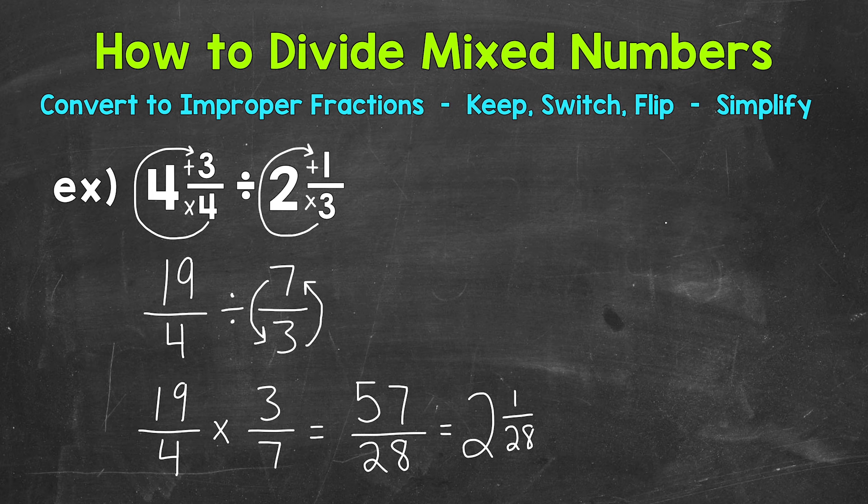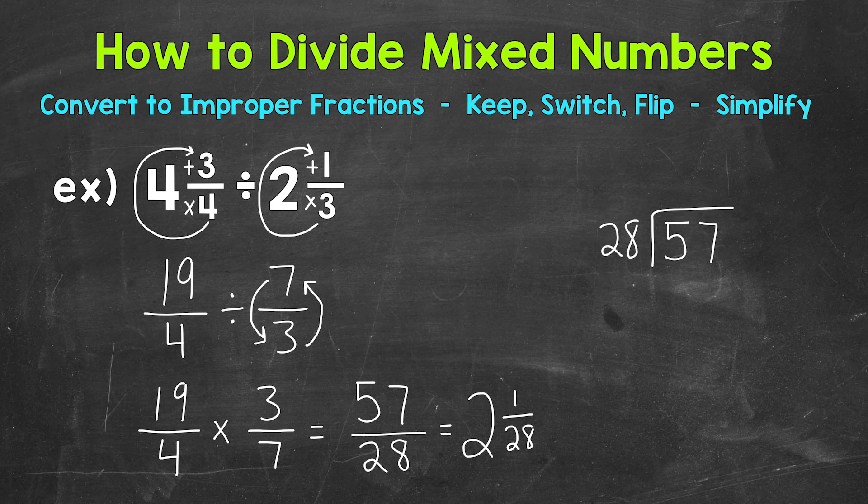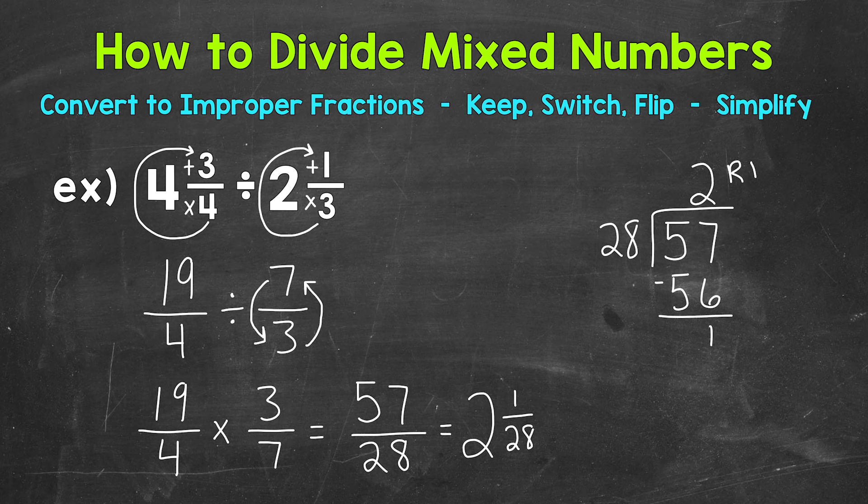Let me write that out as well. So we have 57 divided by 28. So we need to think how many whole groups of 28 out of 57. We said that's 2. That gets us to 56. 2 times 28 is 56. So we get a remainder of 1. This 2 is going to be the whole number part of our mixed number, 2 whole 28 out of 57. And then this 1, the remainder, is going to be the numerator. And then we keep our denominator of 28 the same.